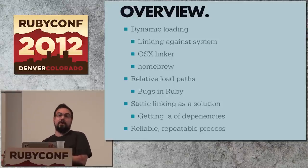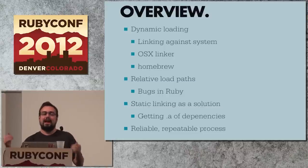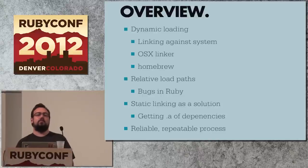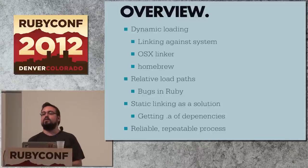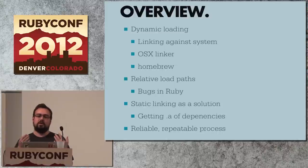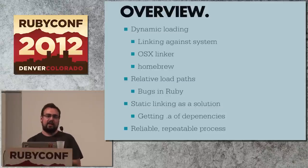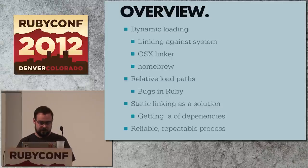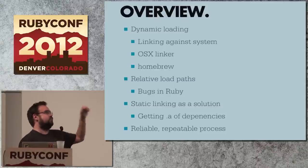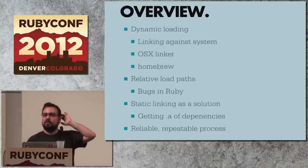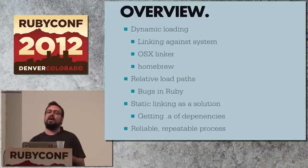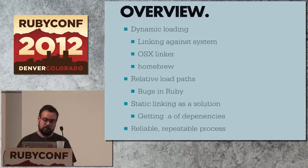That would already be better than what people are doing today, which is that every single Ruby user has to do it. But it would probably mean we wouldn't get timely updates of Tokaido as there were new patch releases, because someone would have to figure out what's going on with LibYAML, what URL it's at, et cetera. For me, that last bullet point turned out to be more of a headache and more of a triumph than a lot of the other parts.